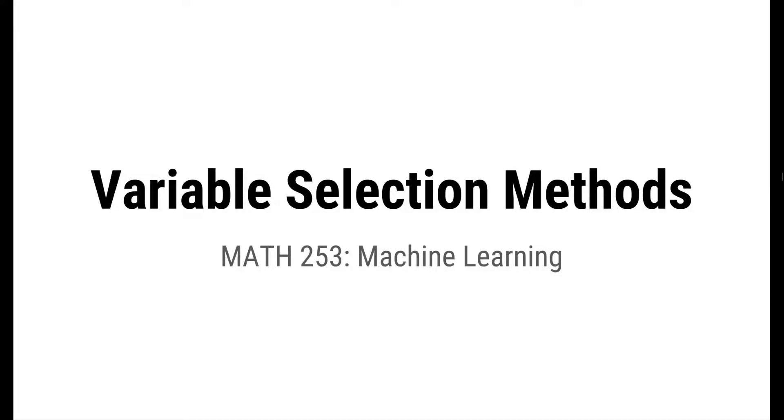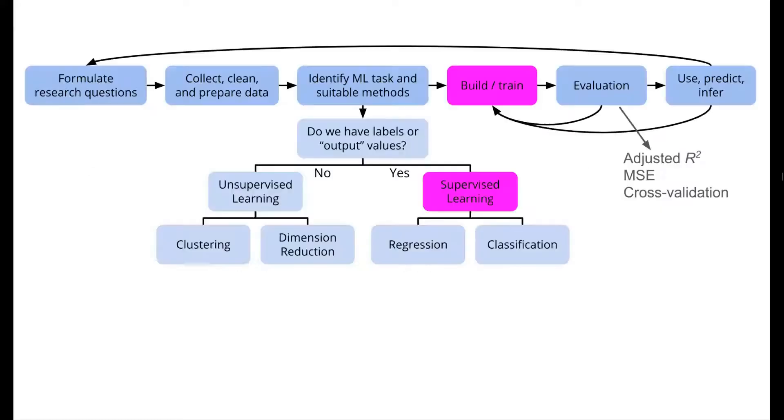In this video, we'll talk about methods for choosing which variables should be included in regression models. In terms of the overall flow of our class, now that we've discussed how to evaluate models with tools like adjusted R-squared, mean squared error, and cross-validation, we can use these tools to build good models. In this phase of the course, we'll talk about methods for constructing models.